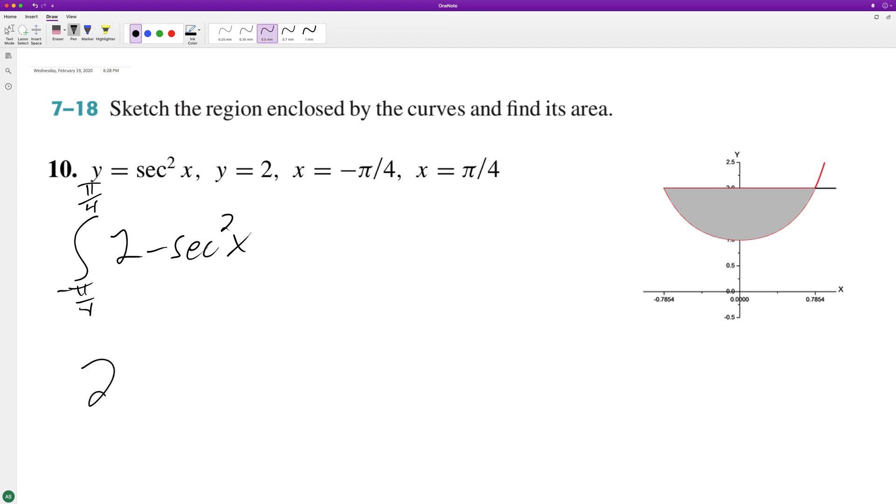When we integrate this, we end up with 2x minus tangent x, since the integral of secant squared x is tangent x. We're going from negative pi over four to pi over four.